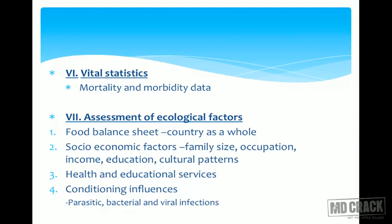Vital statistics — mortality and morbidity data can be used, though they are only vaguely associated with the nutritional status of the community and are not a direct measure. Assessment of ecological factors includes the food balance sheet, done at a national level. Socioeconomic factors such as family size, occupation, income, education, health and educational services, and conditional influences such as parasites, bacteria, and viruses are considered. These are broad indirect indicators that give a general idea of nutritional status.